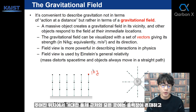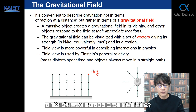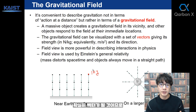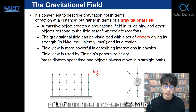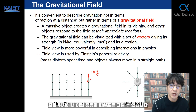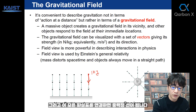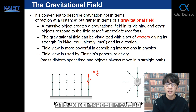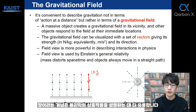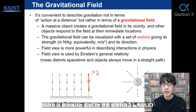At every position near a massive object, there is a gravitational field. The definition is: if an imaginary unit mass exists at a position, what is the force? It will be a vector, so at every position we can draw an arrow. By connecting all these arrows, that forms a gravitational field line. If you are already familiar with electric field lines, it's very similar. The field view is more powerful in describing interaction in physics.